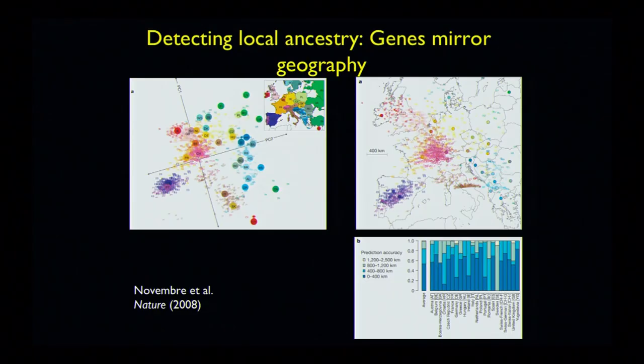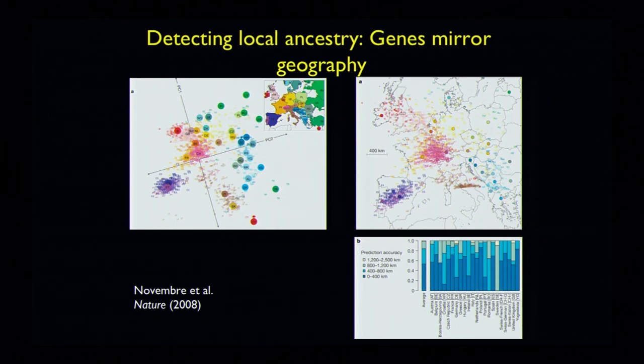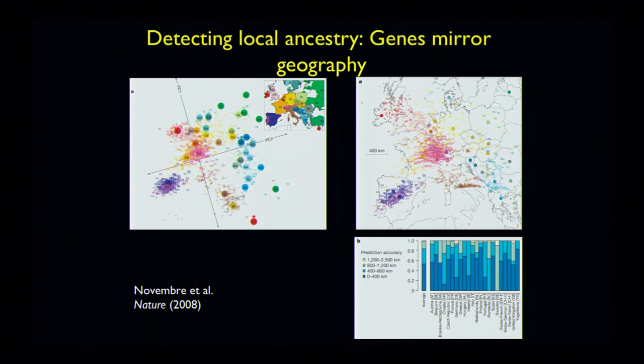These data, published from the lab of our next speaker Carlos Bustamante, done by a very bright young scientist of his called John Novembre, suggest that genes mirror geography. There's a study done in Europe, but I'm sure when equivalent samples come from other parts of the world, the same basic story might be true — that if you collected genetic material at very high density from around the world, you could place people into their geographies from which they most likely came, to remarkable resolution. The bar chart at the bottom in blue suggests that many individuals can be assigned to a region just based on their genetic marker status to under 400 kilometers.